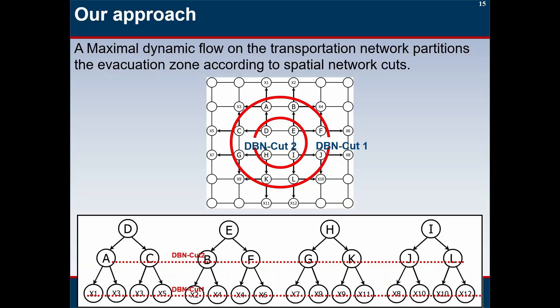Here is our approach to producing evacuation routes. Assume the big red circle is the evacuation zone. We partition the transportation network using a circular cut. Evacuees in nodes A, B, C, F, G, J, K, and L go first outside of the evacuation zone, then evacuees in nodes D, E, H, and I can move. We can conceptualize this movement using a tree structure and parallel-process the evacuation routes.